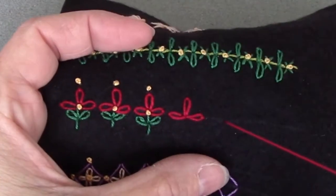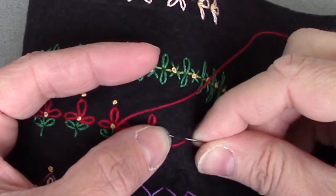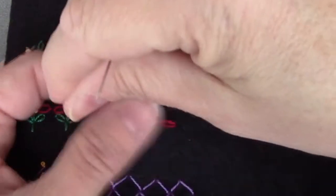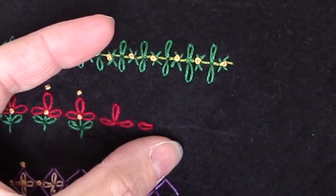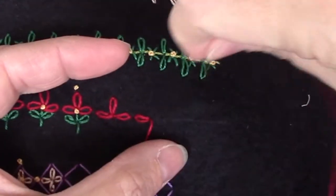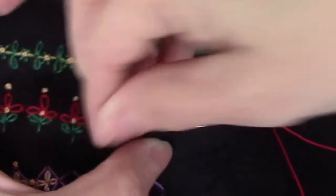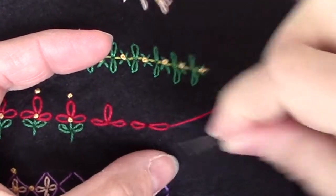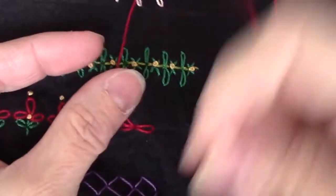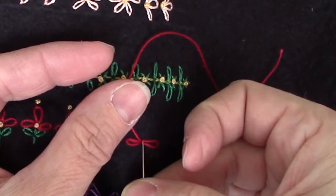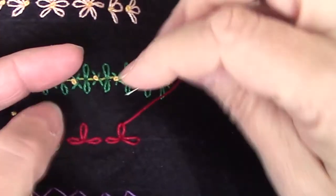Our final combination with the lazy daisy is lazy daisy, straight stitch, and colonial knot. I did mark a horizontal line. And on that line, I am putting two lazy daisies just laying on the line straight across from each other, sharing a center point. And then I'm coming back in from the center and doing a vertical one.